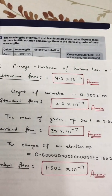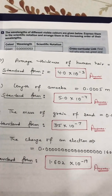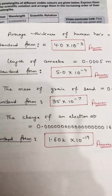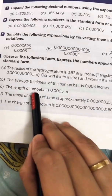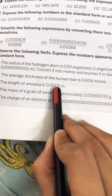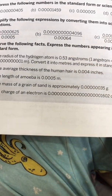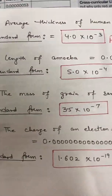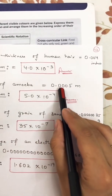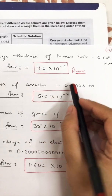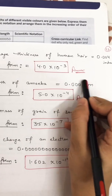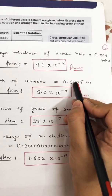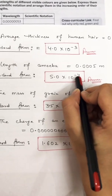Part c: the length of an amoeba is 0.0005 meter. Standard form: shift decimal after the first digit. How many digits shifted? One, two, three, four. So 5.0 × 10 raised to power minus 4.